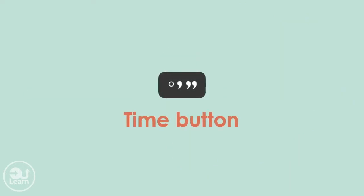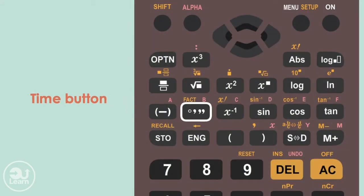The first trick is using the time button. This is the time button. This button allows you to represent time in hours, minutes and seconds, and to use all the maths operations to manipulate time.